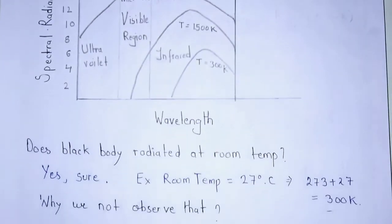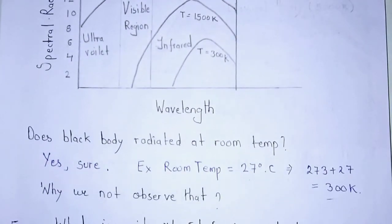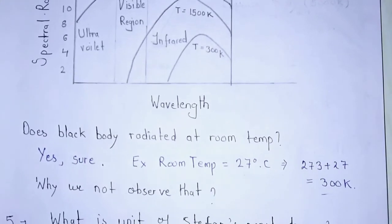Does the black body radiate at room temperature? The answer is yes, sure. For example, if the room temperature is 27 degrees Celsius, to convert it to Kelvin, we have to add 273 and the final result is 300 Kelvin.